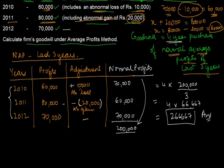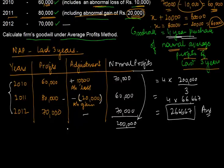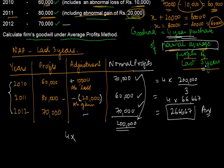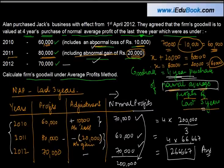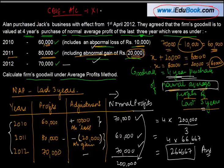To resummarize the steps: we were supposed to compute at 4 year purchase, so 4 times normal average profits. To calculate normal average profits, first calculate normal profits for each year, then total them and divide by 3 — the number of years for which we compute average profits. To compute normal profits, the impact of abnormal losses and abnormal gains are eliminated. Visit our website for CBSE Accounts class 11th and 12th and CA CPT courses.